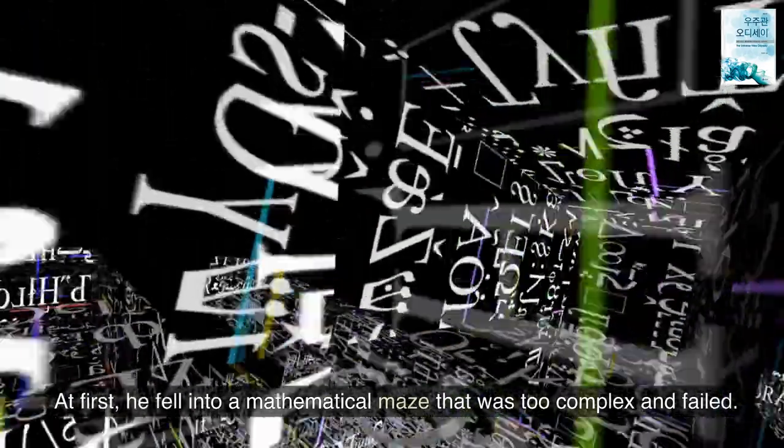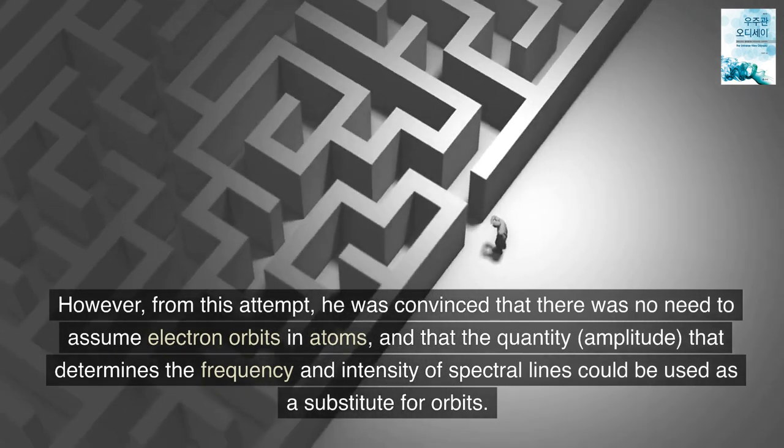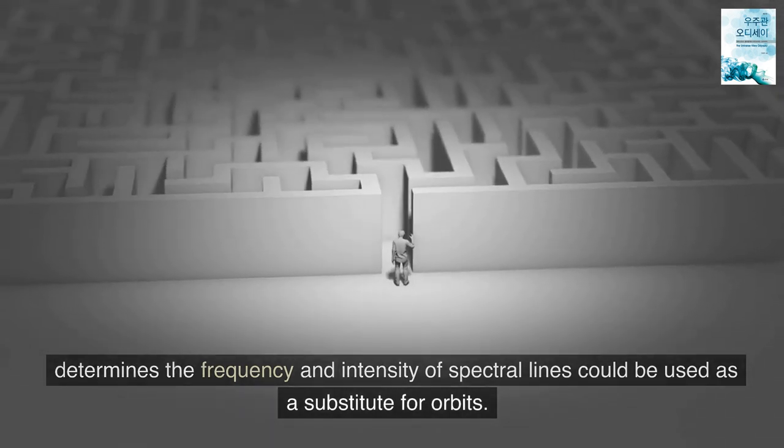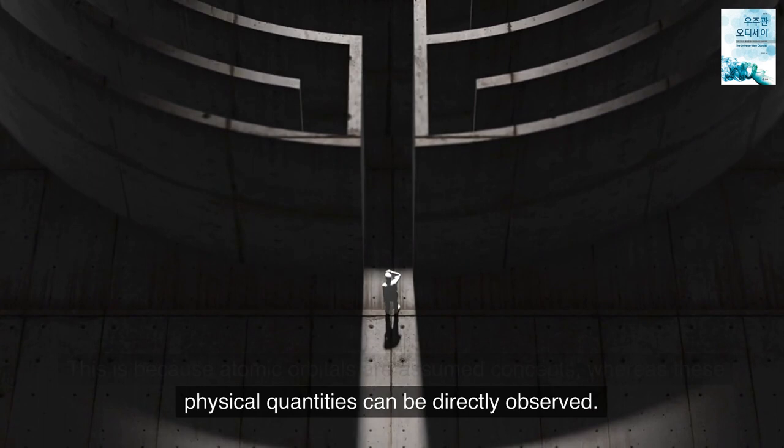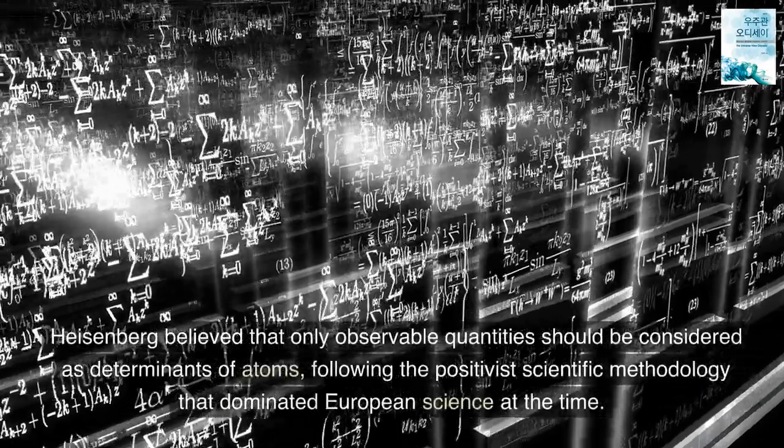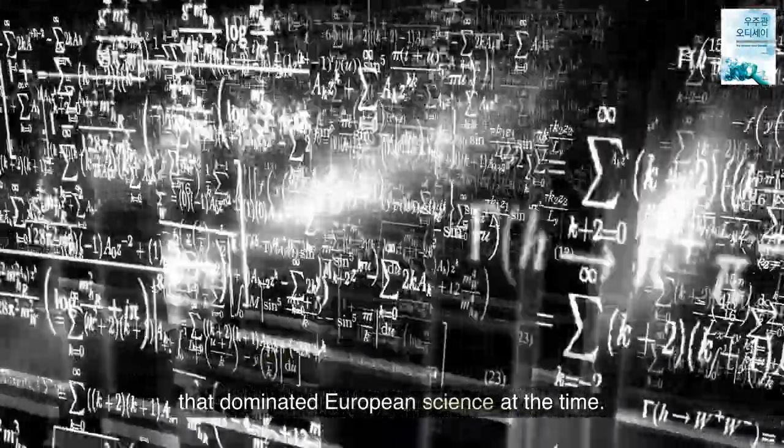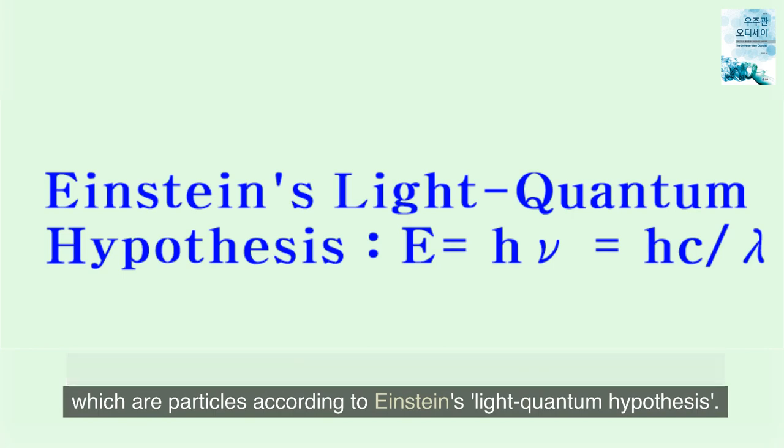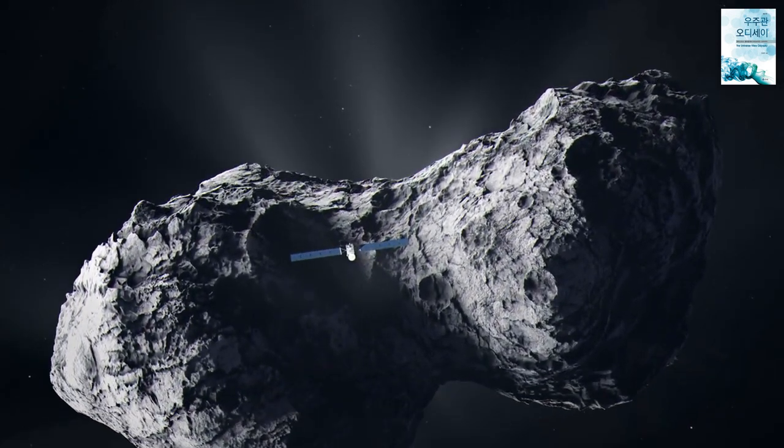At first, he fell into a mathematical maze that was too complex and failed. However, from this attempt, he was convinced that there was no need to assume electron orbits in atoms, and that the quantity, amplitude, that determines the frequency and intensity of spectral lines could be used as a substitute for orbits. This is because atomic orbitals are assumed concepts, whereas these physical quantities can be directly observed. Heisenberg believed that only observable quantities should be considered as determinants of atoms, following the positivist scientific methodology that dominated European science at the time. In particular, he treated radiation emitted from atoms as light quanta, which are particles according to Einstein's light quantum hypothesis. It is a different approach from Bohr, who refused to accept the light quantum concept.